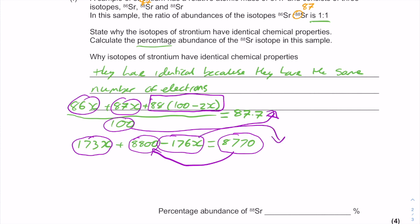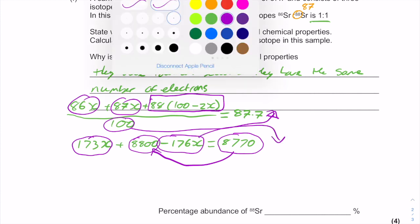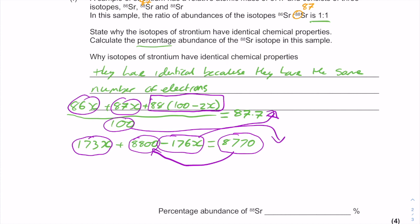So what I'll do here, I'll end up with 8800 minus 8770 equaling what will now be 3x. Do that and I'll end up with 30 equaling 3x, and therefore 10 will equal x.